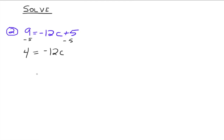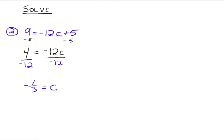Then 4 equals negative 12c. To get the c isolated we divide both sides by negative 12 — the first two examples both happened to divide by negative 12, just a coincidence. We're dividing by negative 12 because we want the coefficient of c to be 1. That gives us negative 1/3 on the left side and c on the right side, so c equals negative 1/3.